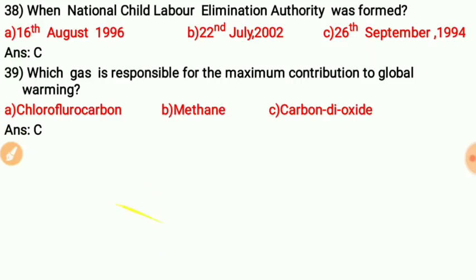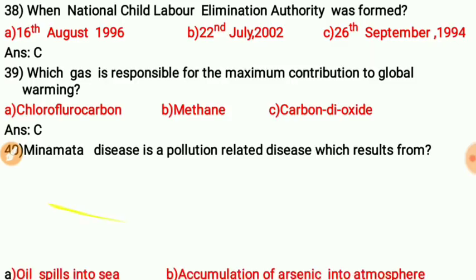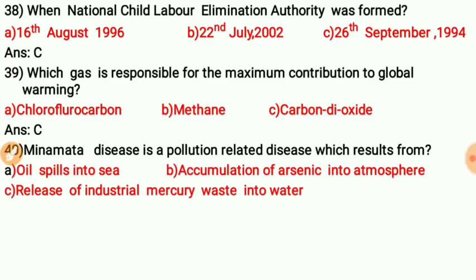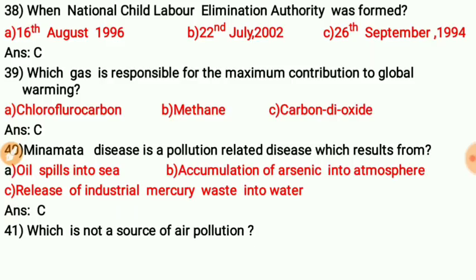Question thirty-eight: Minamata disease is a pollution-related disease which results from the release of industrial mercury waste into water. When industries release mercury into water bodies, it causes Minamata disease.